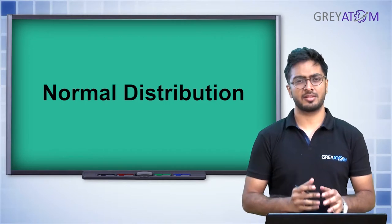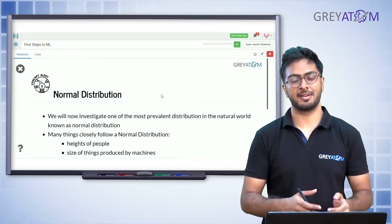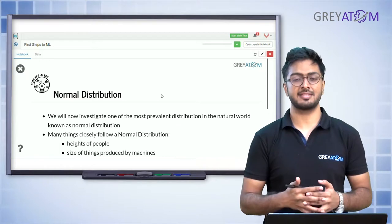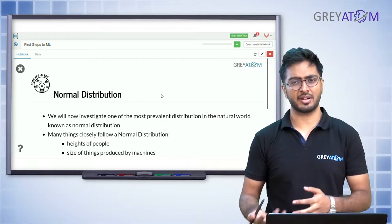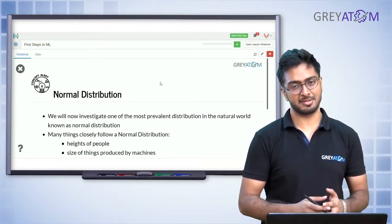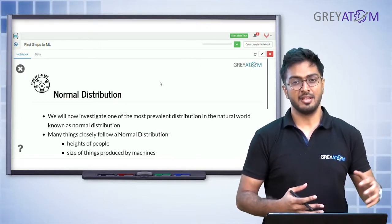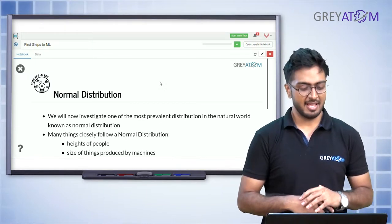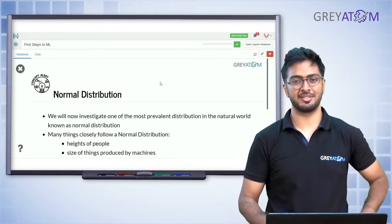We have understood what a binomial distribution is, and that it's a discrete variable's probability mass function. Now we're going to see an example of a probability density function — a probability distribution of a continuous variable. In probability density functions, we're going to talk about normal distribution, which is by far the most popular distribution in this category.